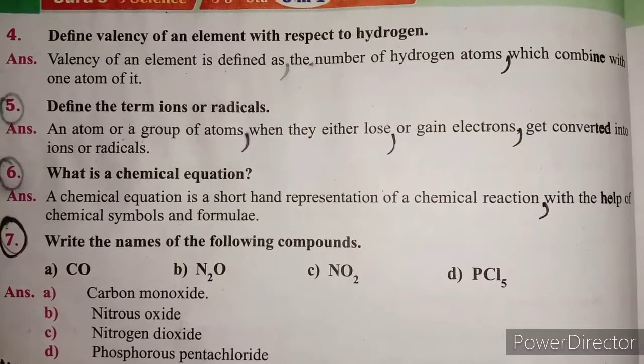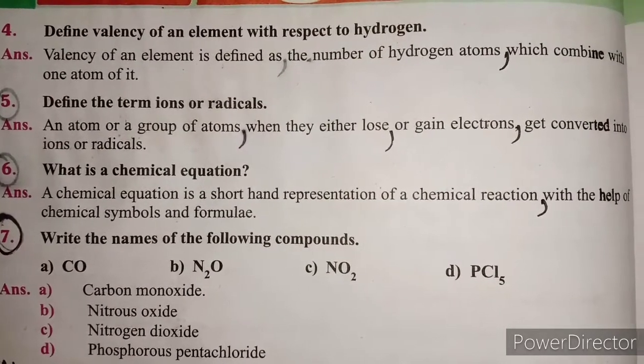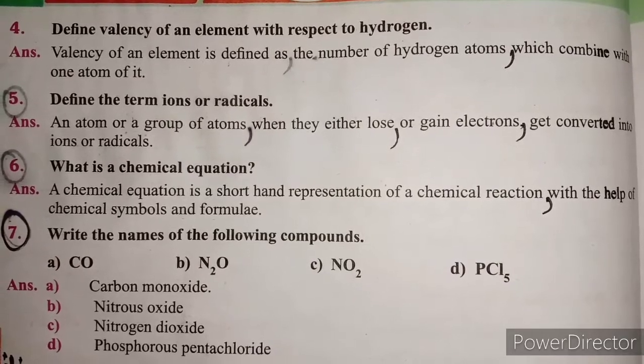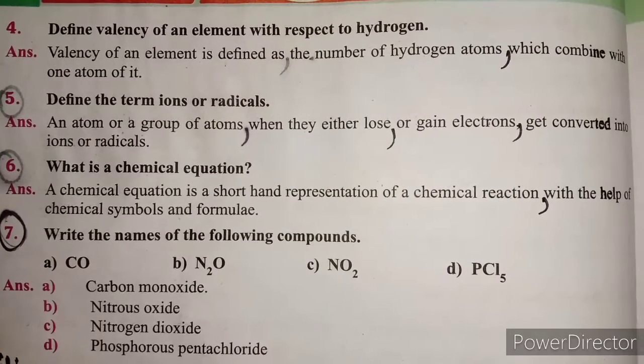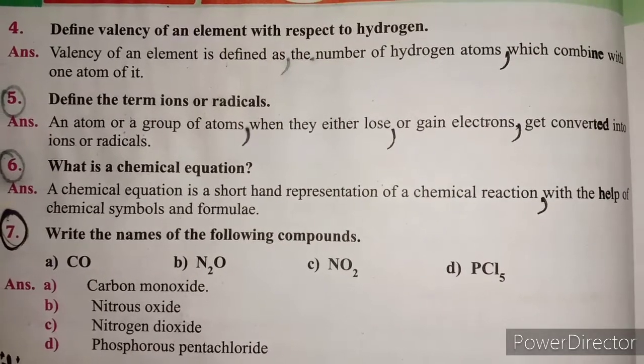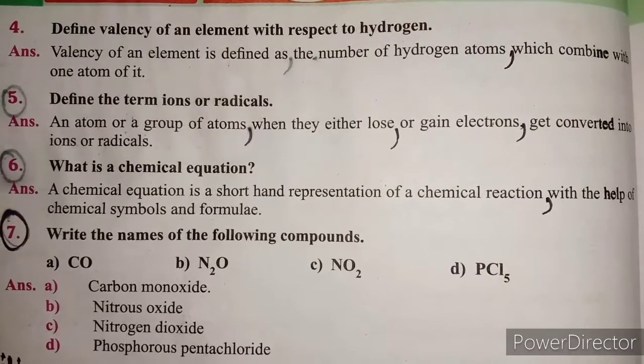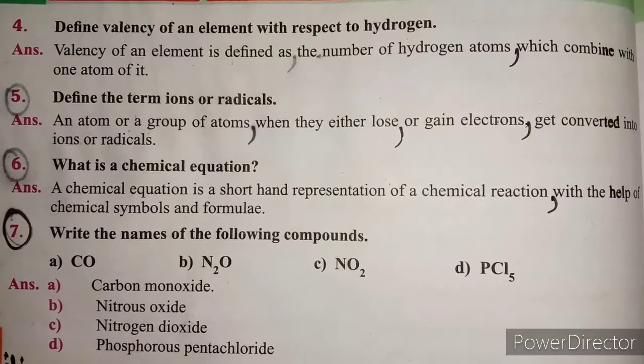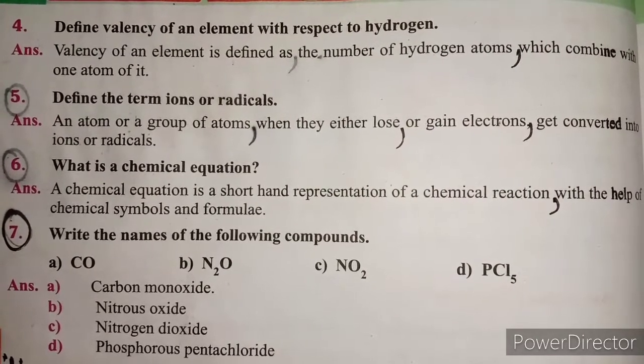Question 4: Define valency of an element with respect to hydrogen. Valency of an element is defined as the number of hydrogen atoms which combine with one atom of it.